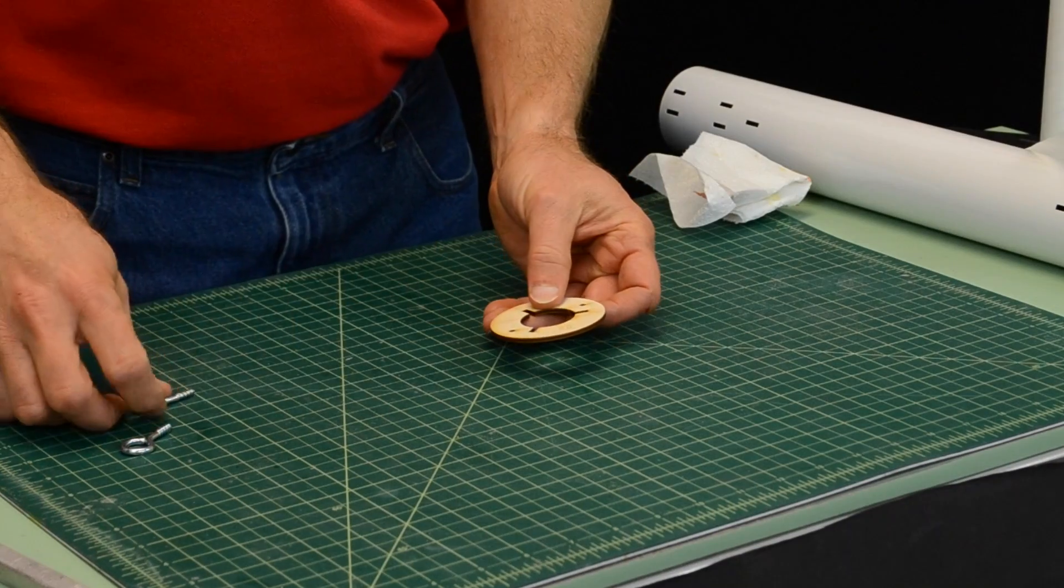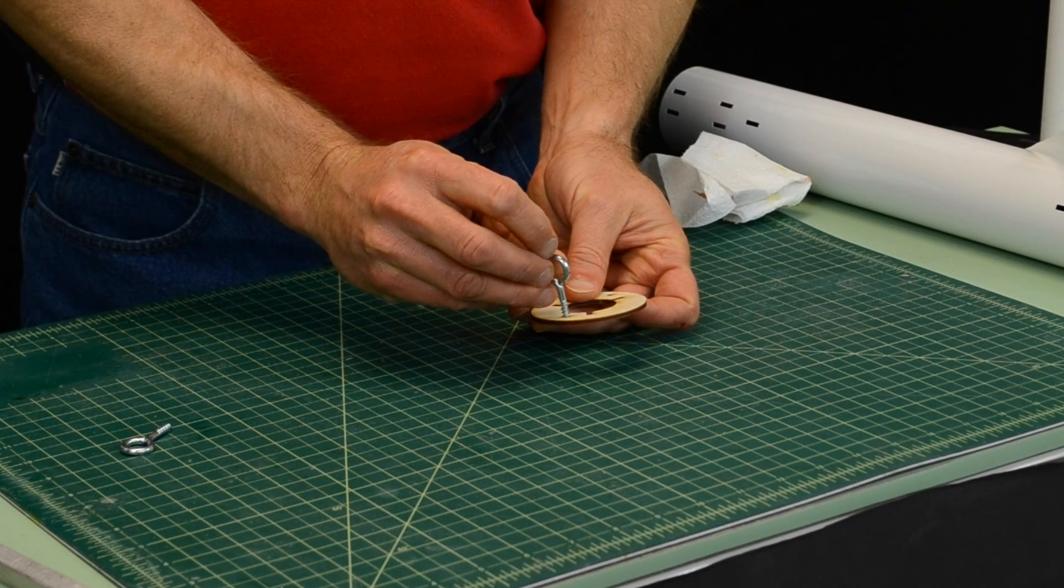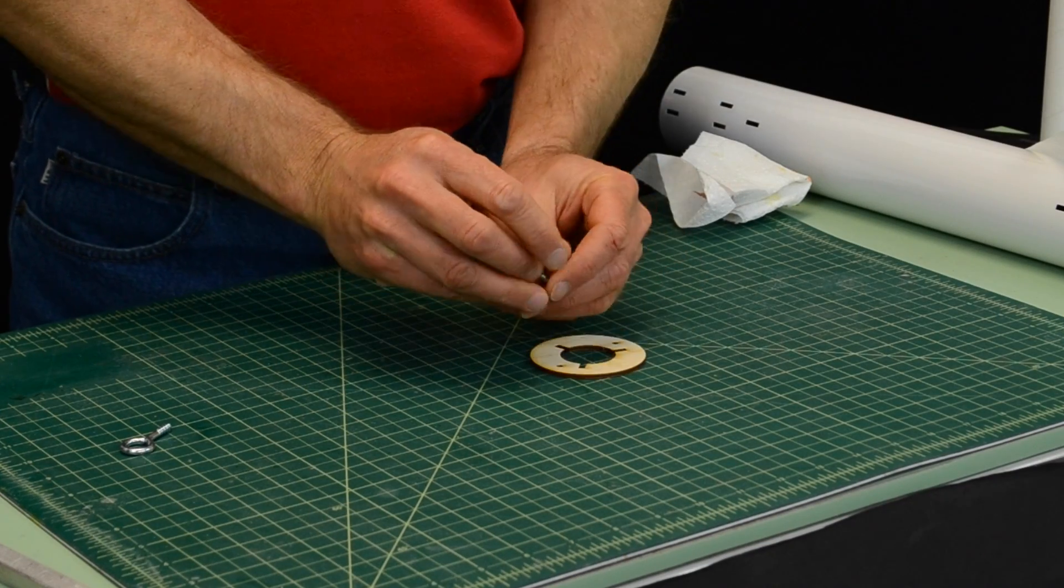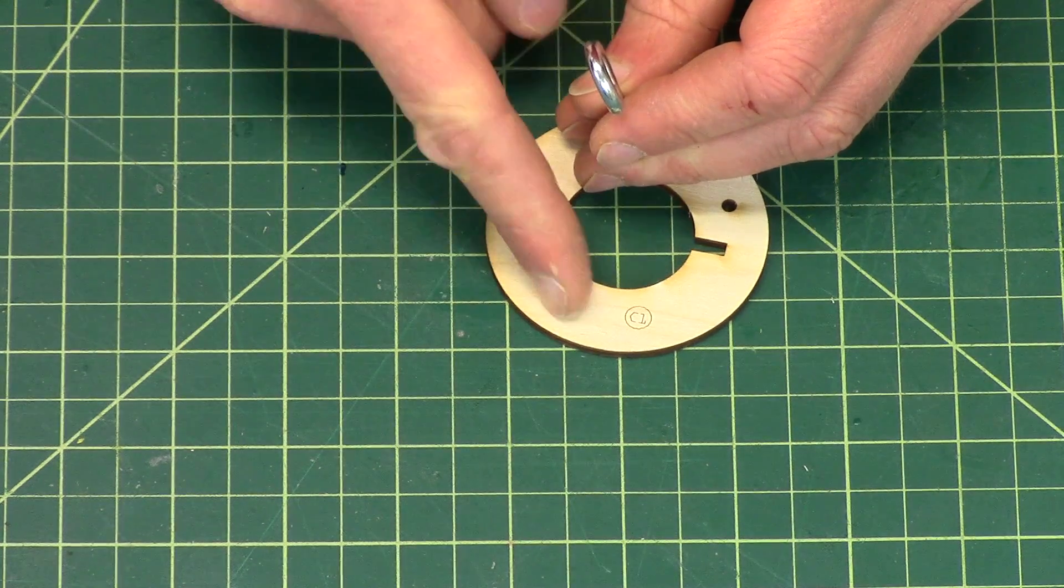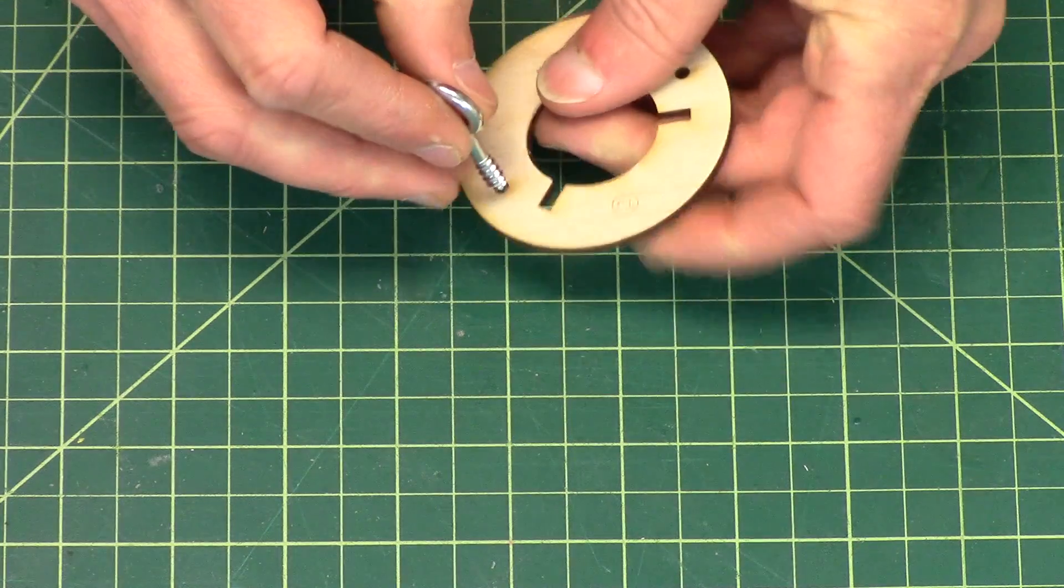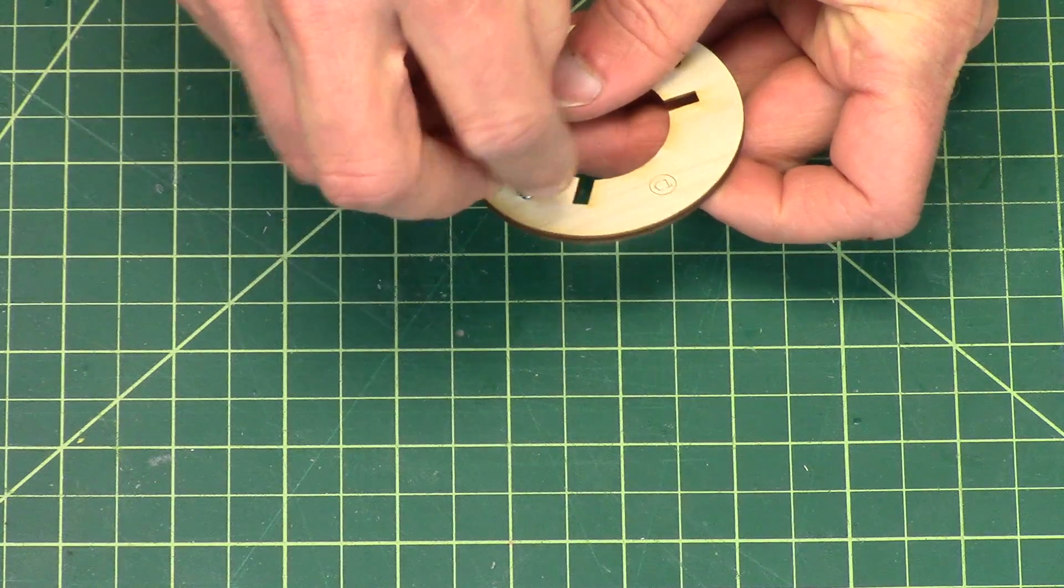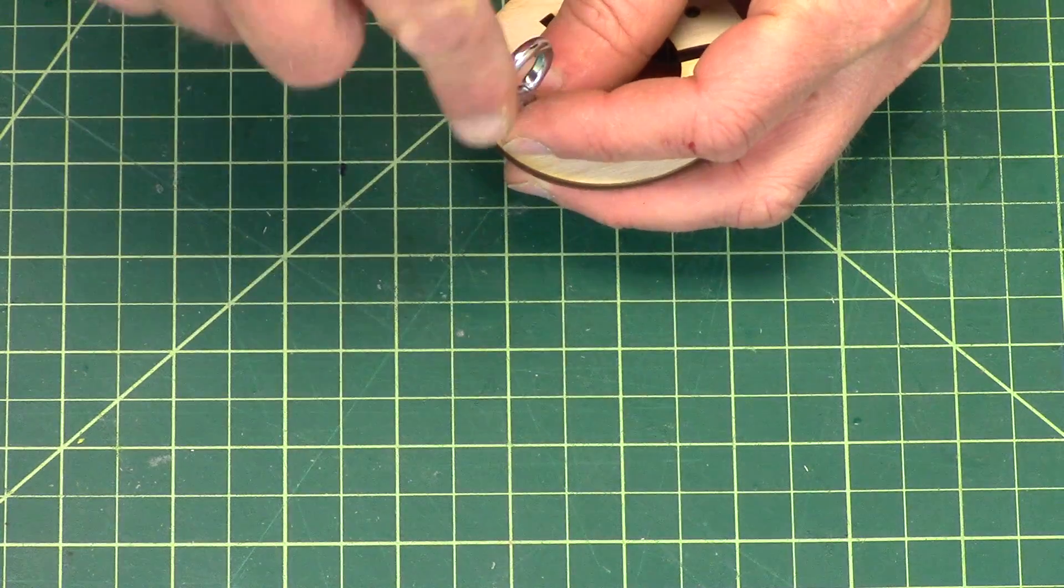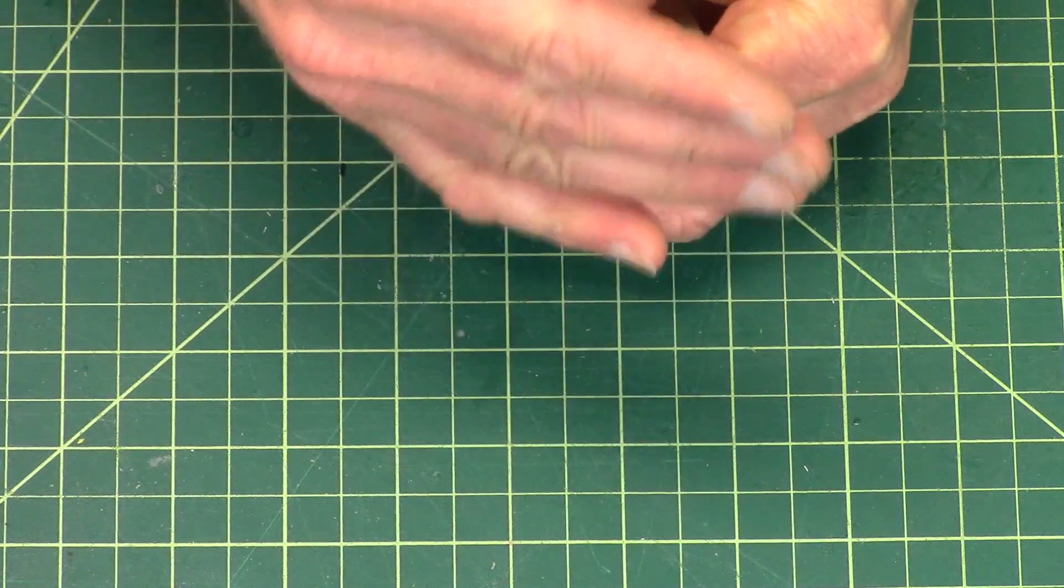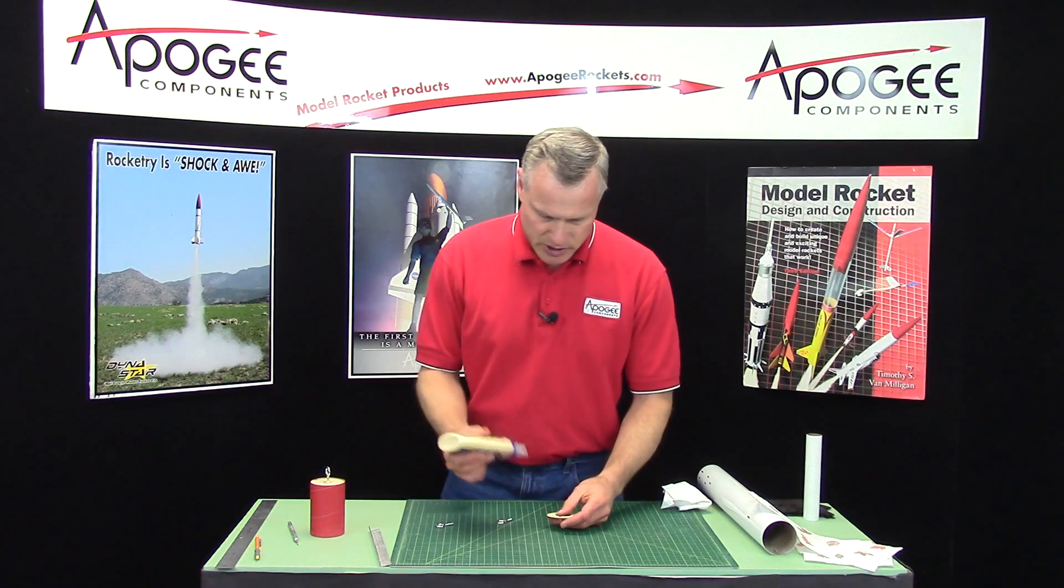We're going to do the same things with the screw eyes. But when we put them into the centering ring, we want the head, the flat part, to go tangential to the edge of the centering ring like that. So they both have to go like that, because if we do them this way, then it could run on the inside edge of the body tube. So just remember that as you're putting these in here.